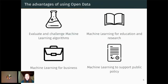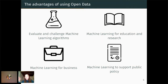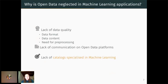This leads us to the first reason why we believe we should be using more open data in machine learning. The challenges I just showed you could be interesting to challenge machine learning algorithms and also to help evaluate and compare performance on a larger number of datasets. Then, since open data covers such a large number of topics, we can imagine some quite insightful and interesting applications for education, for research in various areas, or for business, and eventually to support public policy. So if open data seems so great and we should definitely use it more in machine learning, then why isn't this the case? We identified three main reasons.